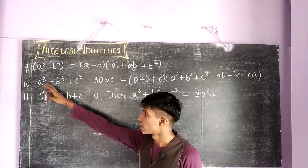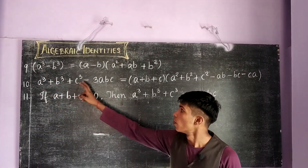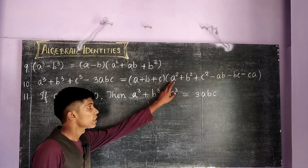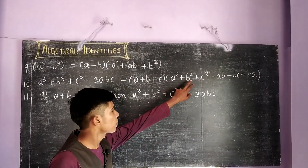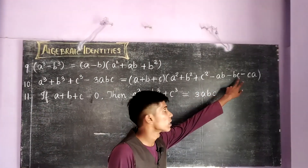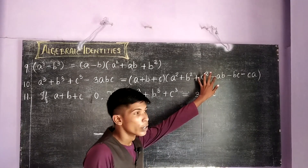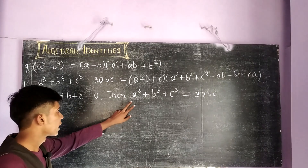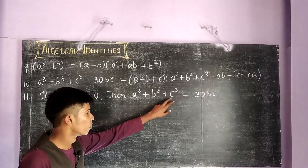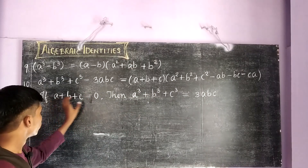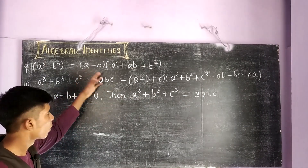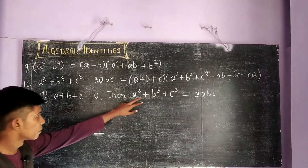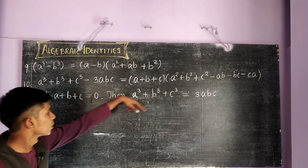The next identity is a cube plus b cube plus c cube minus 3abc, which equals a plus b plus c into a square plus b square plus c square minus ab minus bc minus ca, also in cyclic form. The next identity states that if a plus b plus c equals 0, then a cube plus b cube plus c cube will be 3abc. So if we substitute a plus b plus c equal to 0 in the above expression, the whole term becomes 0, and so a cube plus b cube plus c cube becomes equal to 3abc.